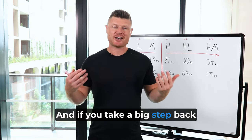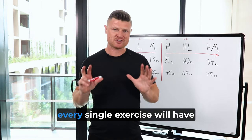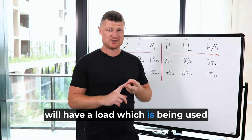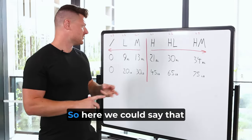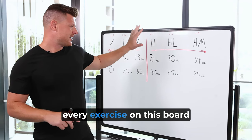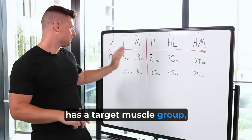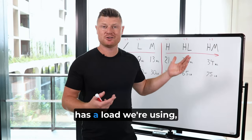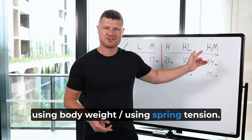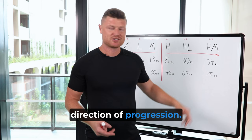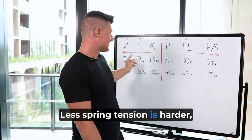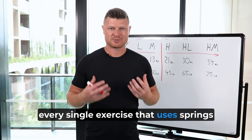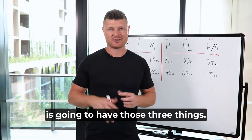If you take a step back and look at the entire picture, every single exercise will have a muscle group that's being targeted, a load which is being used, and a direction of progression. Every exercise on this board has a target muscle group — inner thighs, outer thighs. Every exercise has a load — body weight or spring tension. And every exercise has a direction of progression: less spring tension is harder, or more spring tension is harder. Every single exercise that uses springs is going to have those three things.